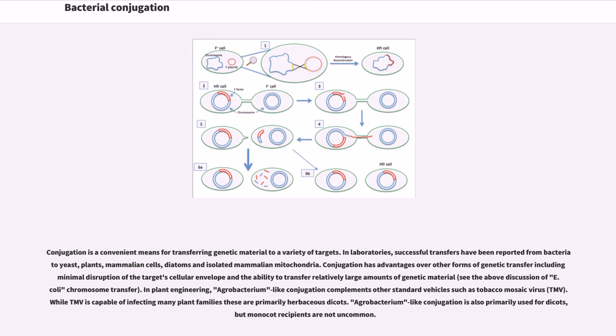In plant engineering, Agrobacterium-like conjugation complements other standard vehicles such as tobacco mosaic virus (TMV). While TMV is capable of infecting many plant families, these are primarily herbaceous dicots. Agrobacterium-like conjugation is also primarily used for dicots, but monocot recipients are not uncommon.